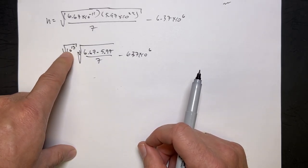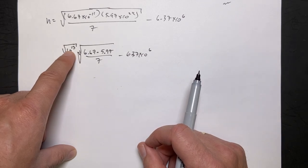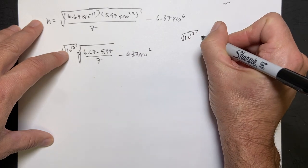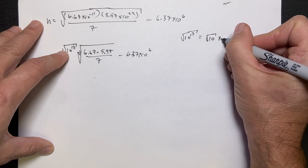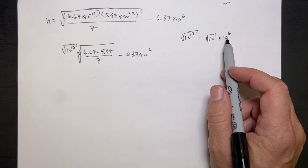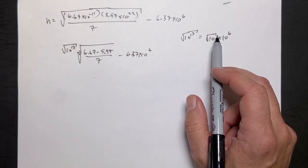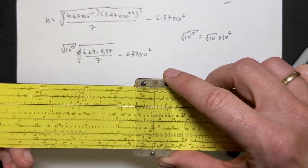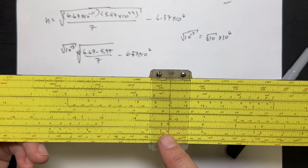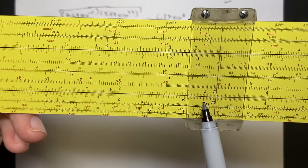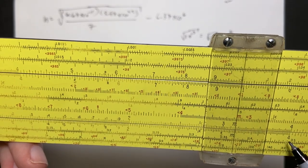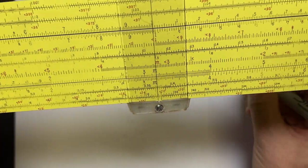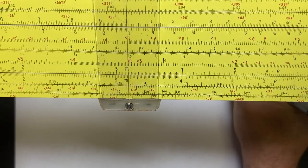So I'm going to rewrite this as the square root of 10 to the 13th times the square root of 6.67 times 5.97, all of that over 7, minus 6.37 times 10 to the 6th. Okay, now 10 to the 13th, what times itself is 10 to the 13th? Well, that would be 10 to the 6.5. So we can write that as the square root, so I'm going to write the square root of 10 to the 13th is equal to the square root of 10 times 10 to the 6th. Isn't that right? Yeah, because 10 to the 6th squared is 10 to the 12th, and then I have another 10. And now I can take the square root of 10. Let's go ahead and do that. The square root of 10, I'm a little nervous here. Okay, so I go over here to 1, because that's 10.